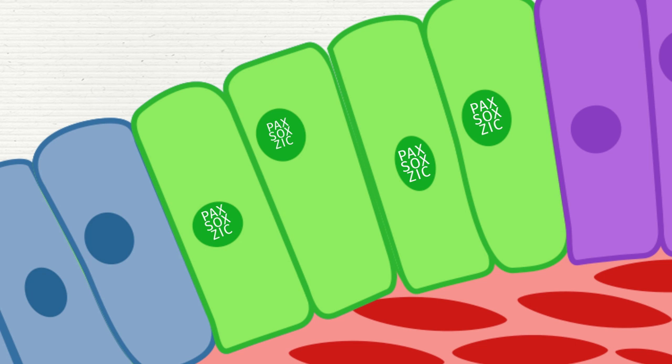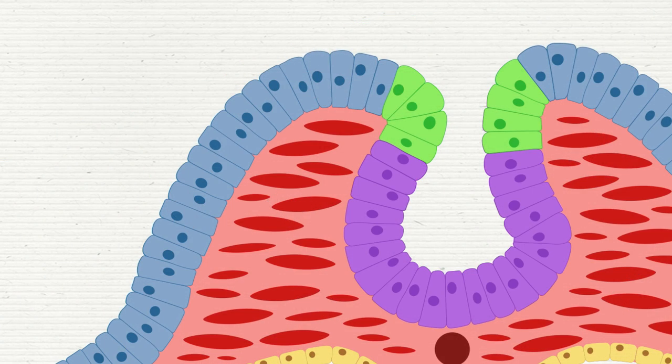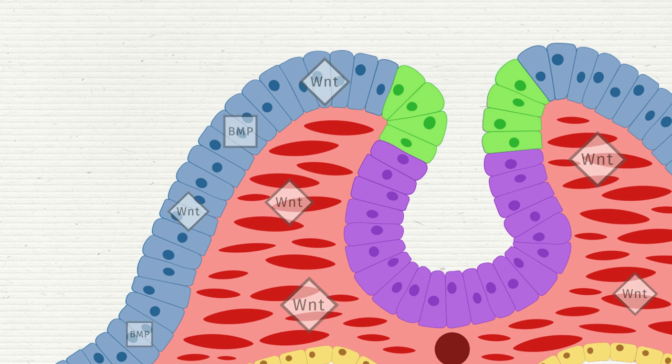In a second phase, during neurulation, Wnt signaling from the ectoderm and mesoderm and BMP signaling from the ectoderm promote a second set of transcription factors called the neural crest specifiers.